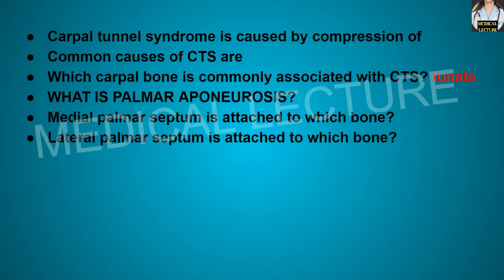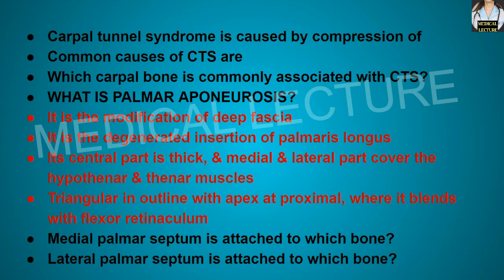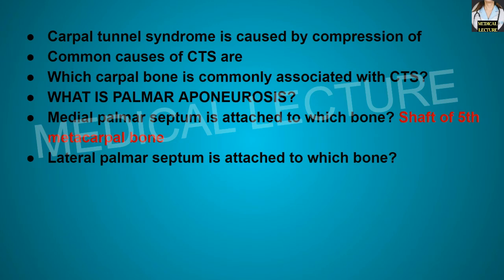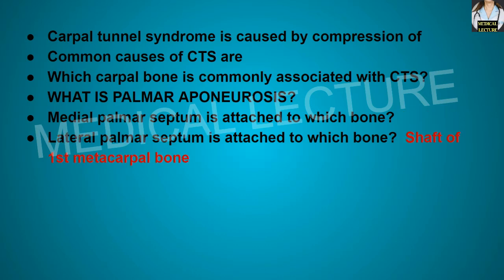What is the palmar aponeurosis? Palmar aponeurosis is a modification of the deep fascia and is the degenerated insertion of the palmaris longus. Its central part is thick; the medial and lateral parts cover the hypothenar and thenar muscles. It is triangular in outline with apex proximally where it blends with the flexor retinaculum. Medial palmar septum is attached to the shaft of the 5th metacarpal bone, and the lateral palmar septum is attached to the shaft of the 1st metacarpal bone.